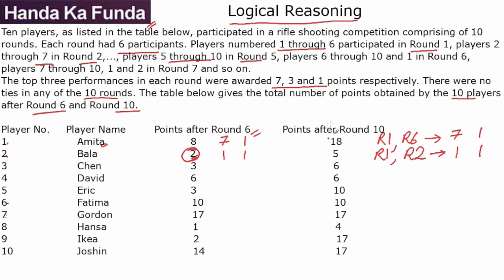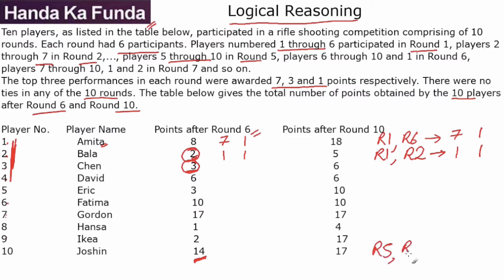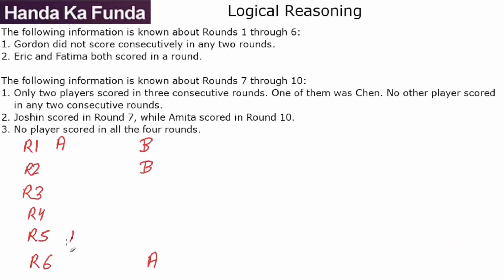Let me make the table on a round-wise basis — perhaps it would be a little easier. The middle players are not going to help, so let me look towards the end. Joshin has a score of 14. Joshin did not take part in the first 4 rounds, so the score of 14 must have come only from round 5 and round 6. In 2 rounds he scored 14, meaning he must have scored 7 and 7 — so Joshin is the winner of both round 5 and round 6.